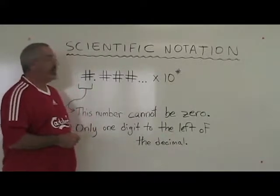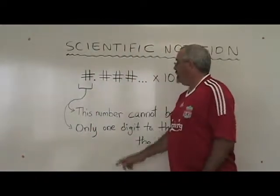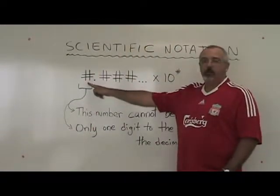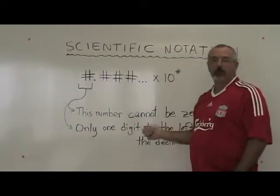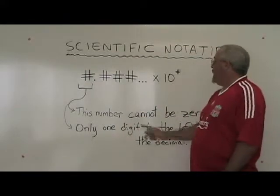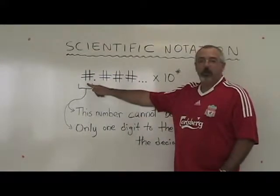The rules of scientific notation are that the first number cannot be zero, and there is only one digit to the left of the decimal.